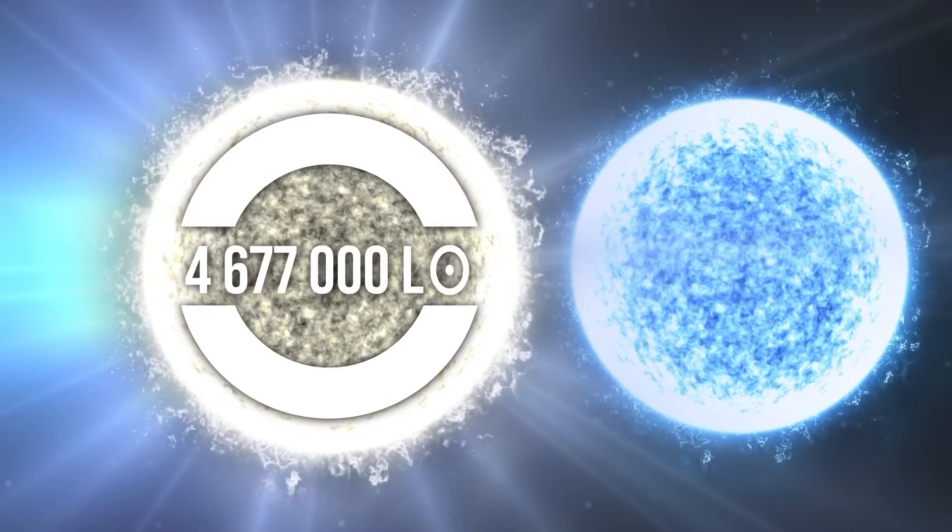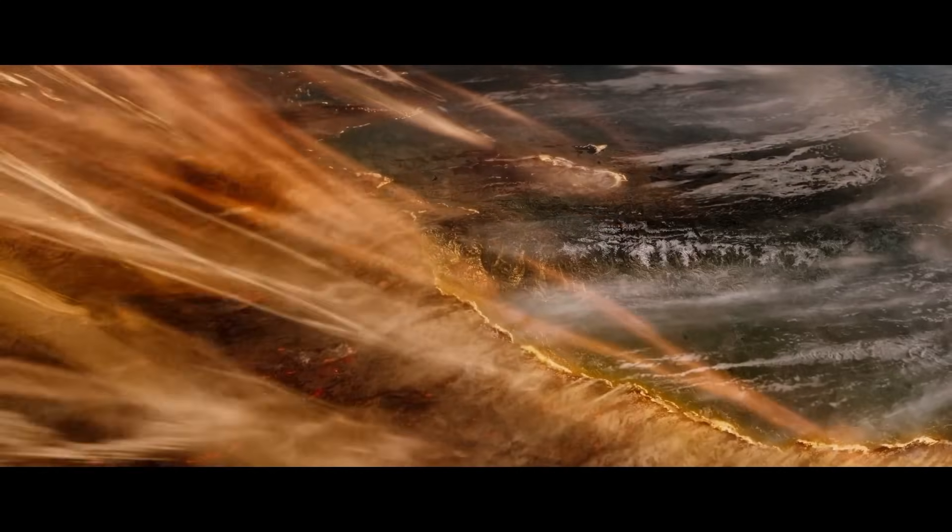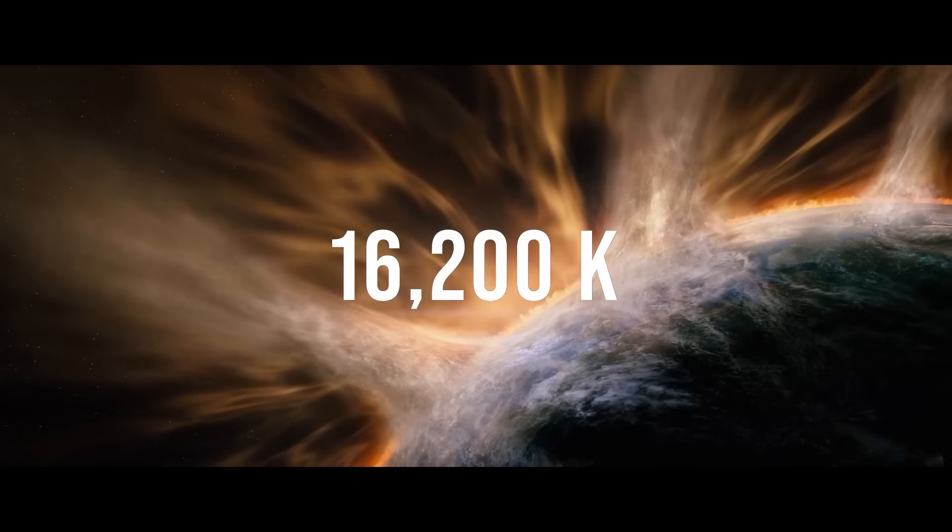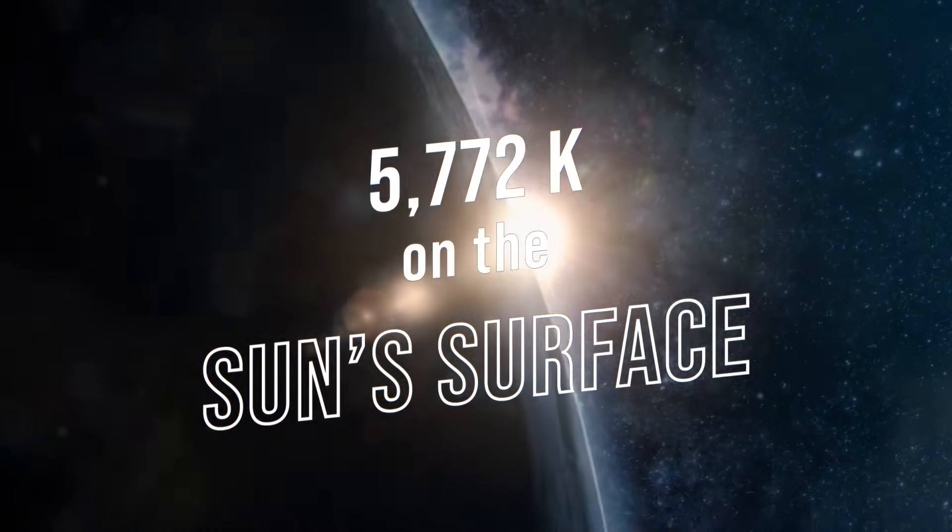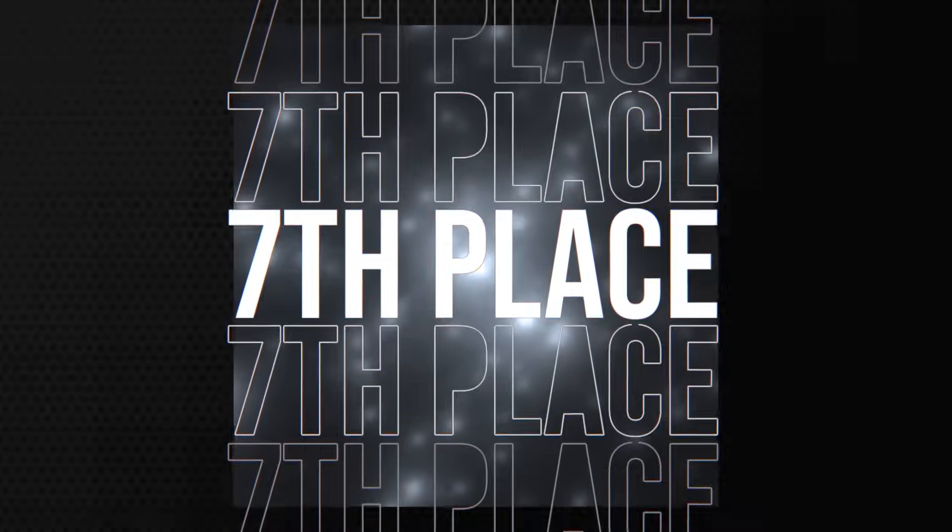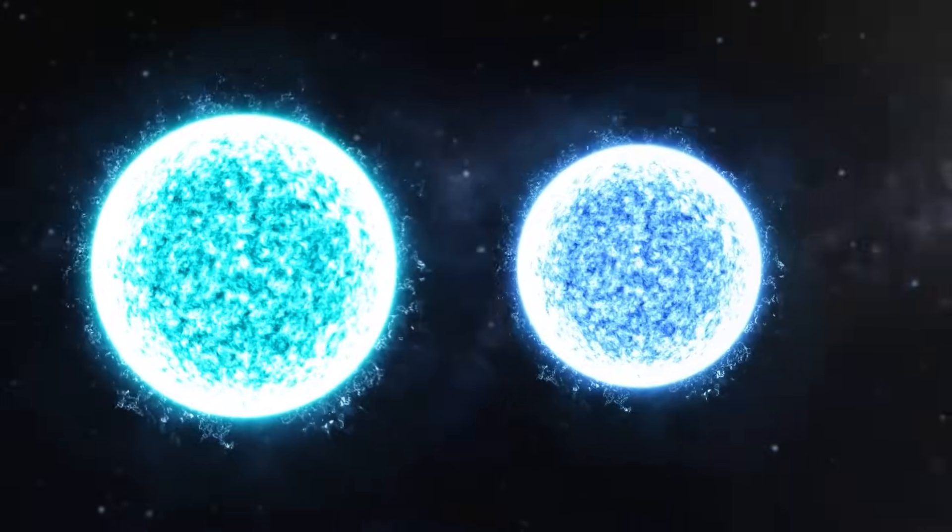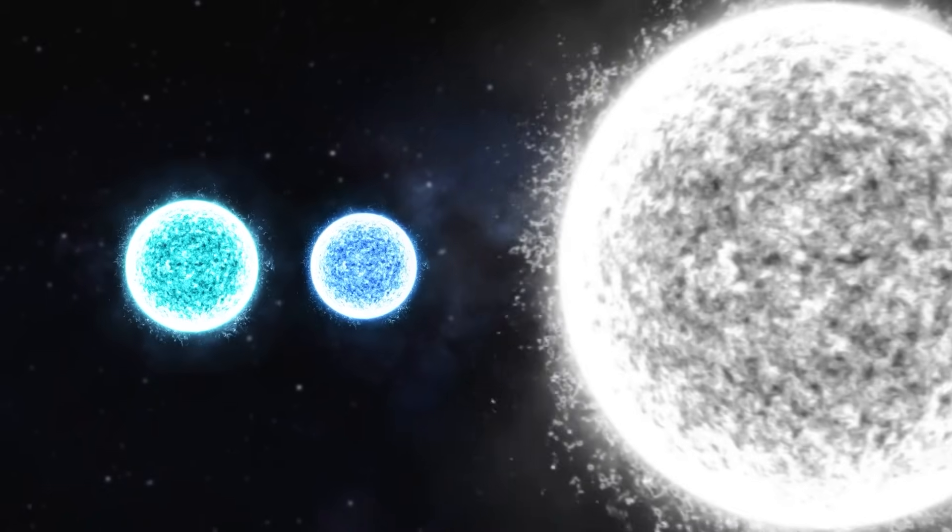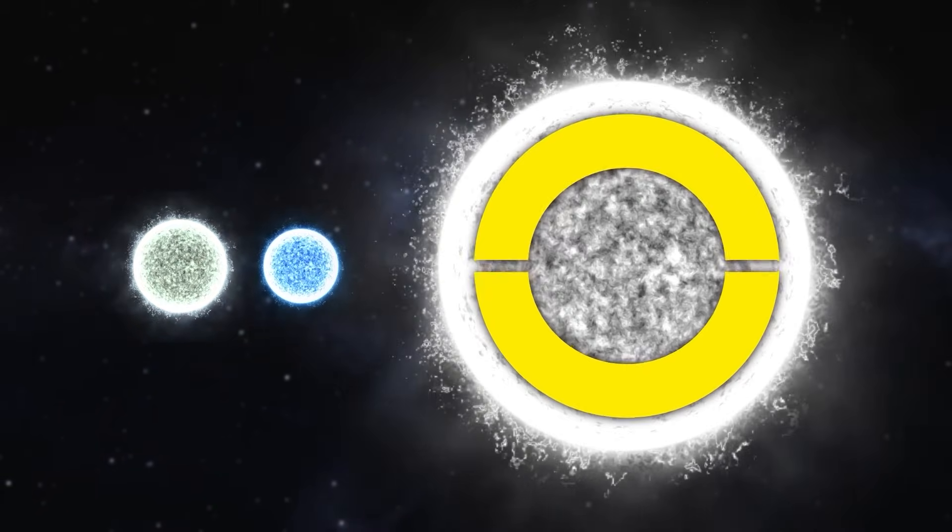Its luminosity is equally stunning: almost 4,777,000 times that of our Sun. If our Sun were this bright, the temperature on Earth would rise to an insane 16,200 Kelvins—that's almost three times hotter than the Sun's surface. But R136a1 ranks only seventh in the universe in terms of luminosity.